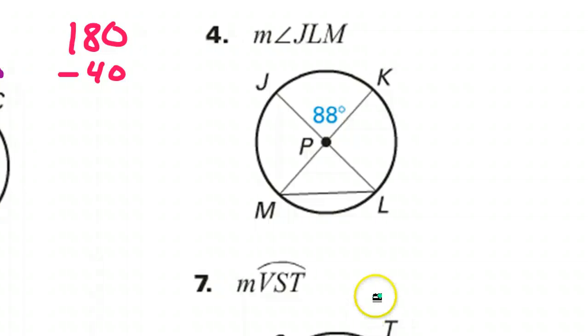All right, let's take a look at number four. Interesting. Pay attention to the fact that we have some vertical angles here. And vertical angles are always equal. We'll come back to that. We're supposed to find the measure of angle JLM. So that's angle JLM. This is the angle that we're supposed to find.